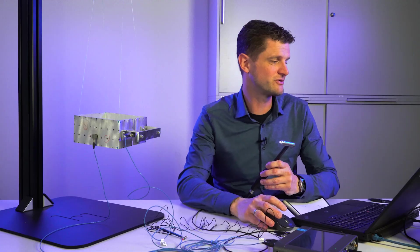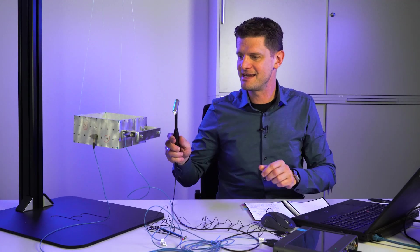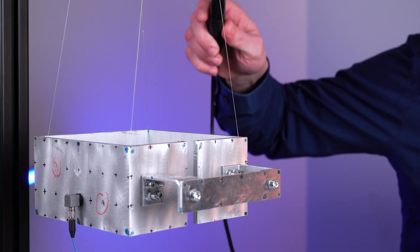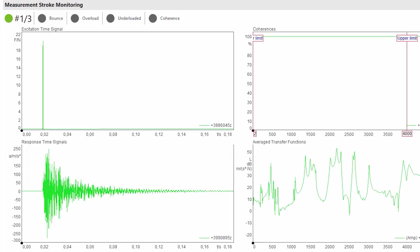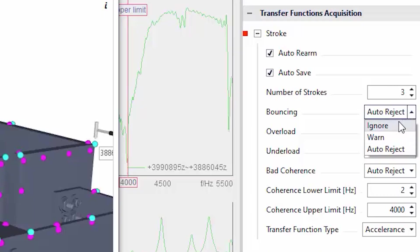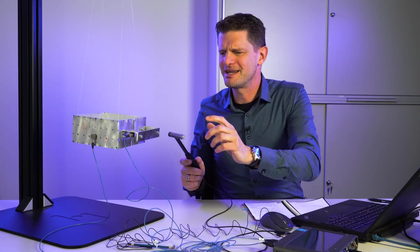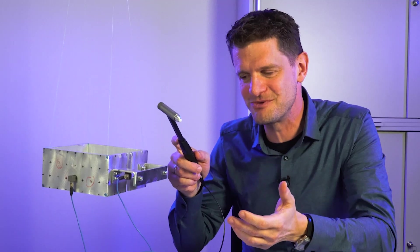So we need to avoid the double impact during our measurement and therefore there's a quality check in most of the software. It's called bounce. So if I hit it once you see this is just one hit. But if I hit it double you see it's automatically rejected. So this problem of double impact is gone. But I need to measure this point and every time I get a double impact. So what can I do now?